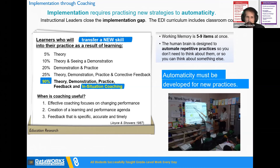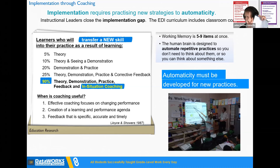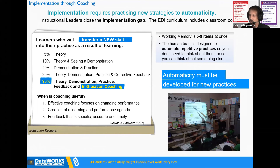A focused walkthrough: pick one thing, like pair share, send an email — 'I'm going to come to classrooms today or the next two days, we're all going to look for pair share. I want to see you do a pair share. I'm going to carry a whiteboard that just says pair share — I'm looking for that one thing.' Everybody knows what you're looking for. The basic coaching in the classroom is the red and orange poster — that's it. You're not redesigning a lesson on the fly.